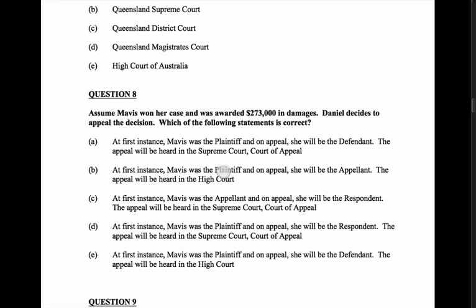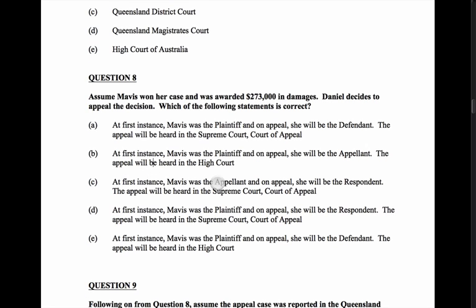At first instance, Mavis was the plaintiff, and on appeal she will be the appellant — no, Daniel's appealing, so Daniel will be the defendant-appellant and Mavis will be the plaintiff-respondent. That can't be true. At first instance, Mavis was the appellant — no, that's not true, she was the plaintiff. Answer D: at first instance Mavis was the plaintiff, and on appeal she will be the respondent, with the appeal heard in the Supreme Court Court of Appeal. That sounds accurate — D is the answer.